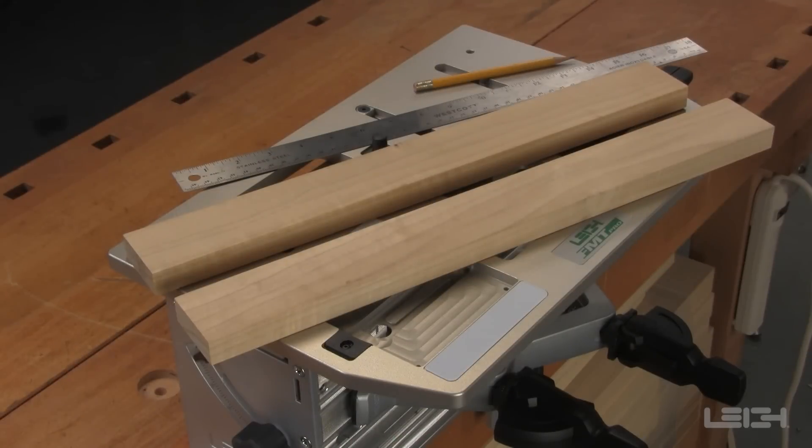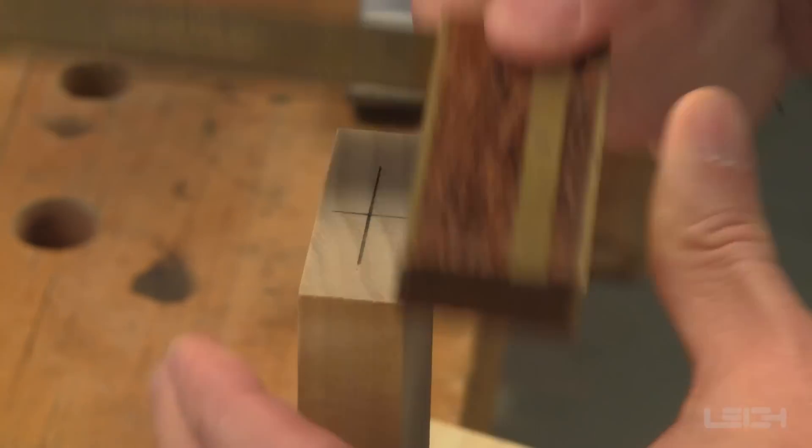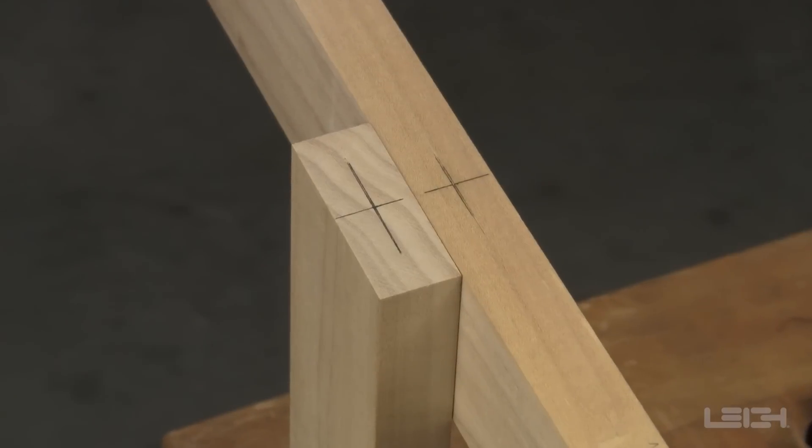Begin with two pieces of stock with square ends and edges. Mark across at the center of your tenon position and on the mortise board.